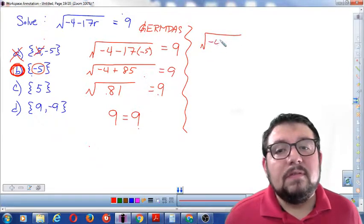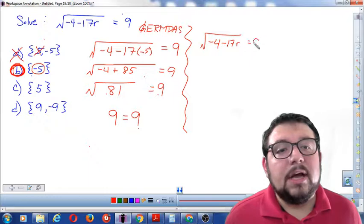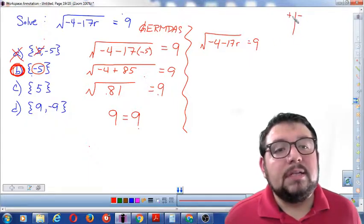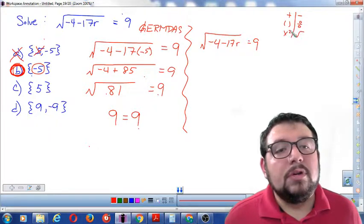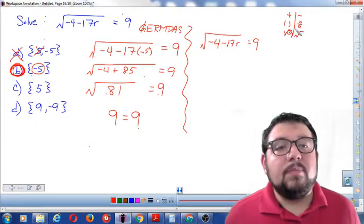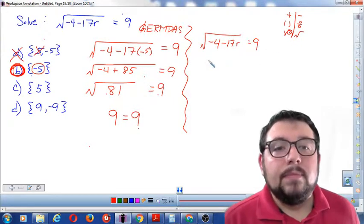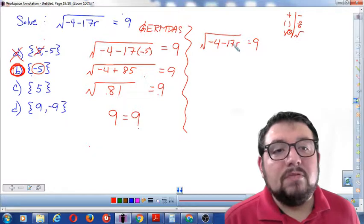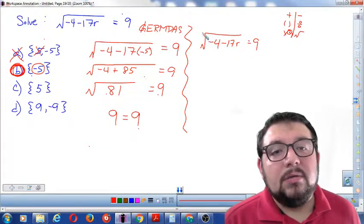The square root of negative 4 minus 17r equals 9. I'm going to make my little map over here that we use in school: positive and negative, multiply and divide, square and square root. If you're going to solve equations it's nice to have this little map with you for when you're starting out. So first I see a big square root and I want to get rid of it. The opposite of square root is square. So what am I going to do?